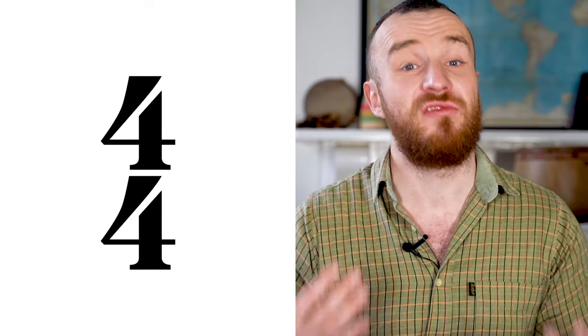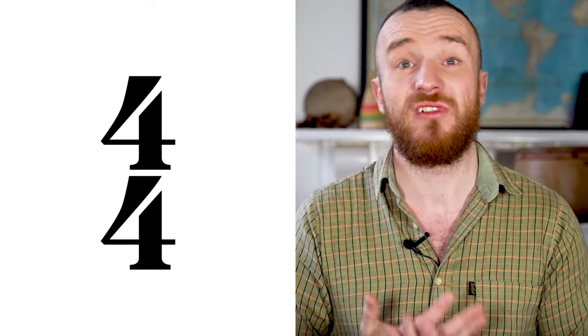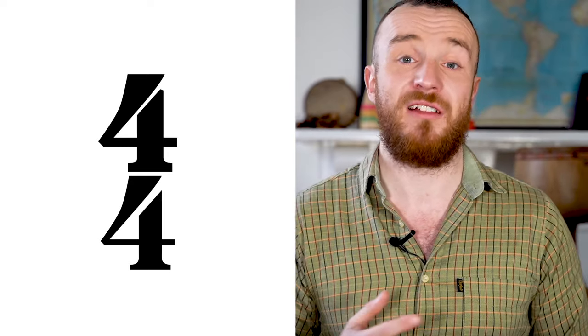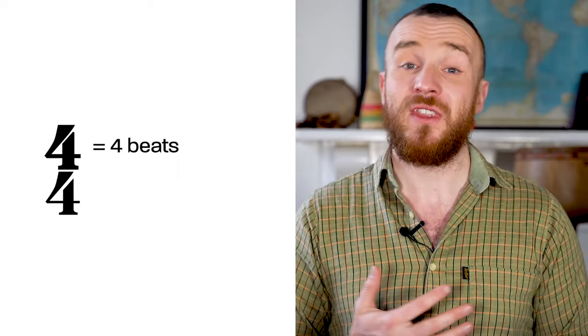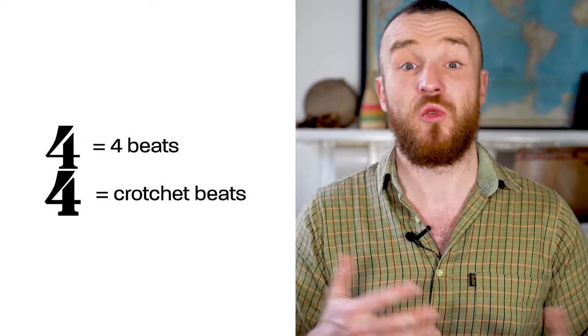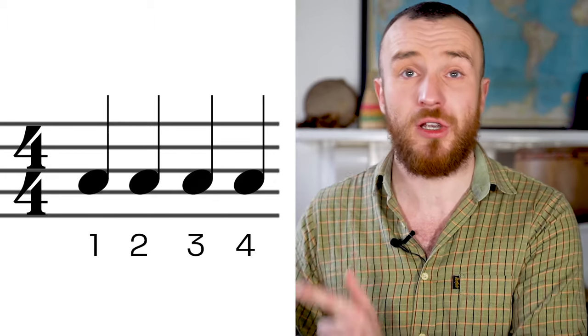In this time signature, which is four four time, probably the most common time signature that you'll encounter, the four on the top tells us that we have four beats and the bottom number tells us that each beat is a crotchet or a quarter note. So four four is four crotchet beats per bar.